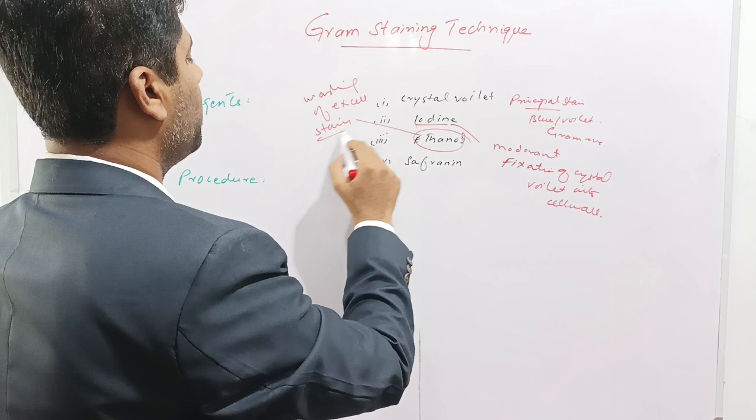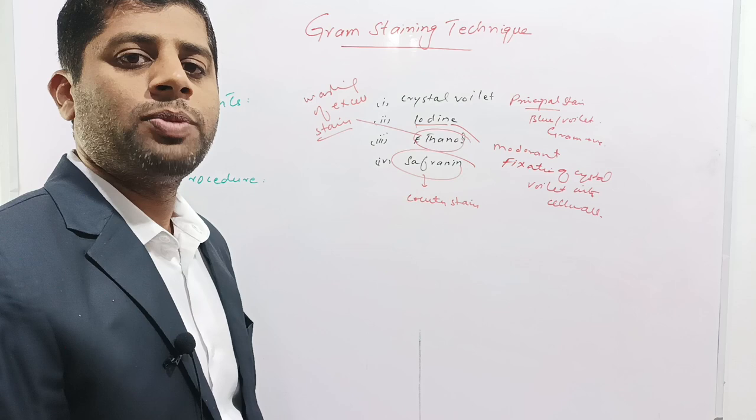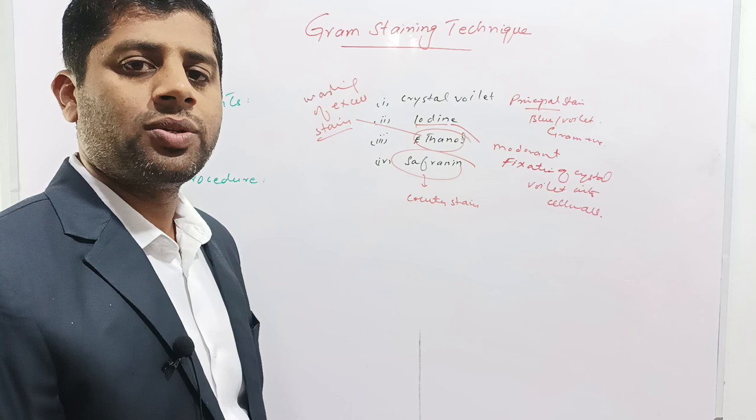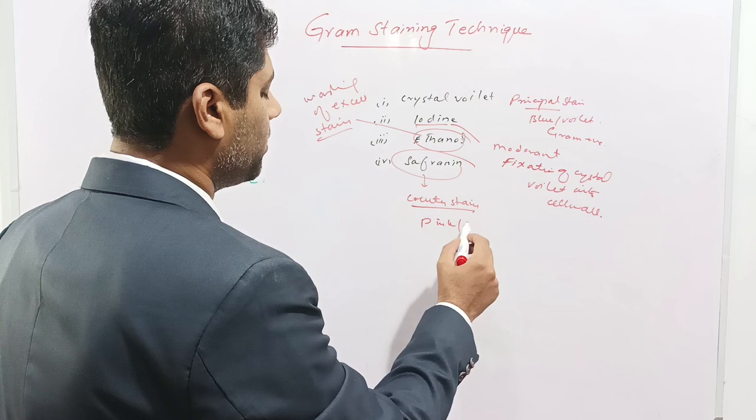The last reagent is safranine, also called the counterstain. The counterstain is applied when the principal stain fails to work — for example, in Gram negative bacteria, due to the thin peptidoglycan layer in their cell wall, they cannot retain the crystal violet dye. After washing with ethanol, the bacteria lose their dye and appear transparent. Therefore, these bacteria are counterstained with safranine so they can be identified microscopically. Safranine gives a pink or red color to the bacteria, so Gram negative bacteria appear pink or red.